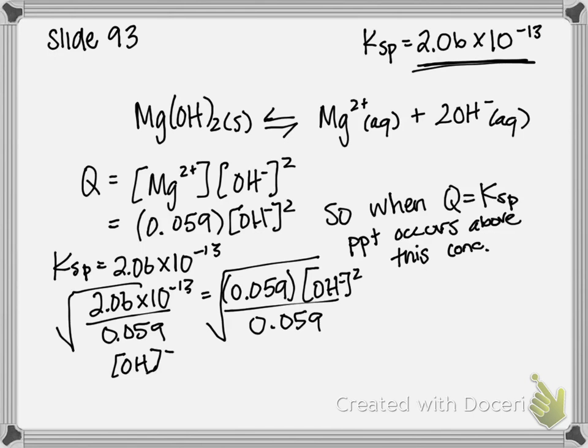So that is the minimum amount of hydroxide concentration needed to precipitate out magnesium from this seawater sample. And that's it. Thanks for listening.